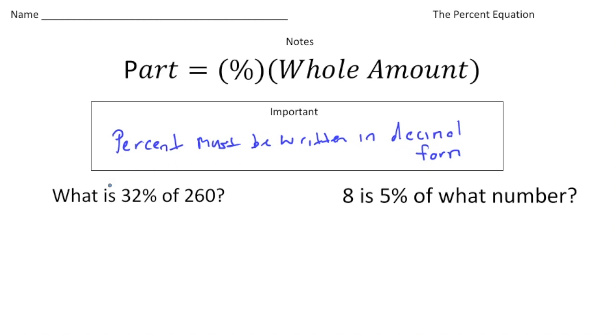Alright, so let's dive into the first problem. It says, what is 32% of 260? Well, the 32% is obviously the percent, and the 260 is the whole amount, right? So we're trying to figure out the part.